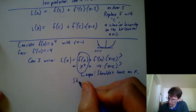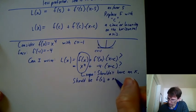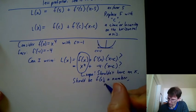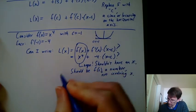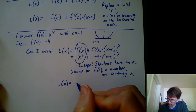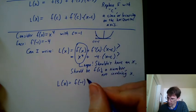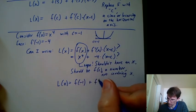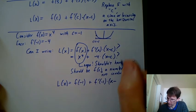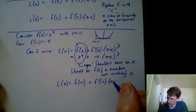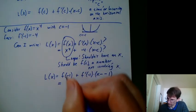It should be f of c, which is a number not involving x. So it would be better to write L of x equals f of negative 1. So I'm plugging in that value of c equals negative 1. I'm not just leaving it as x. Plus f prime of negative 1 times, and now this part gets a little tricky. It's x minus c, c itself is negative 1, so it's x minus minus 1.